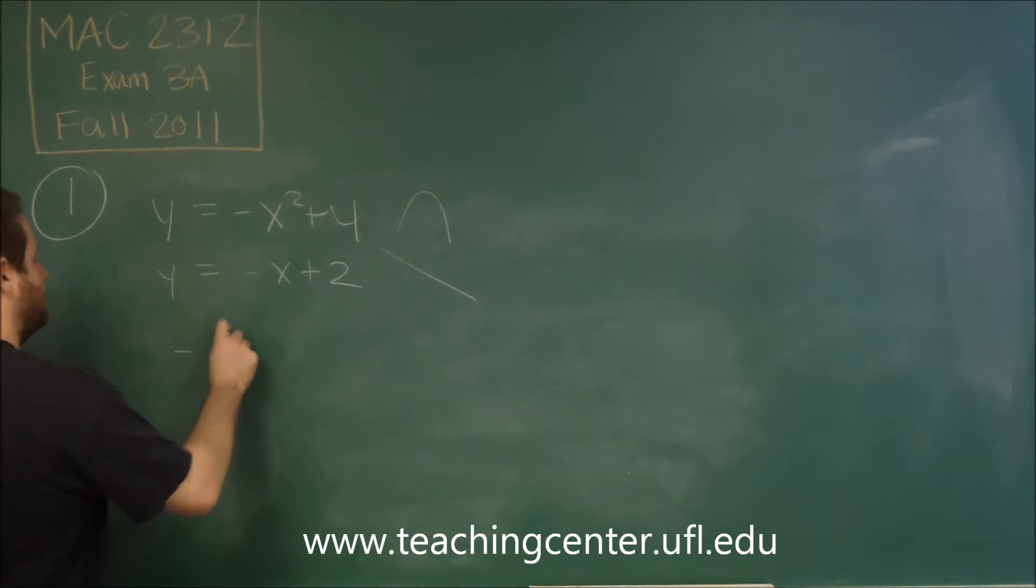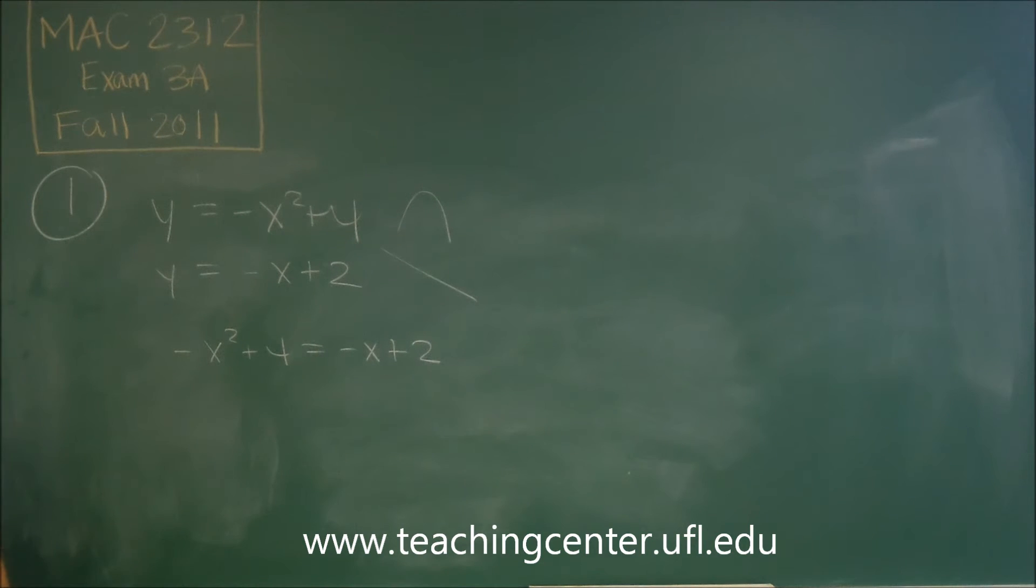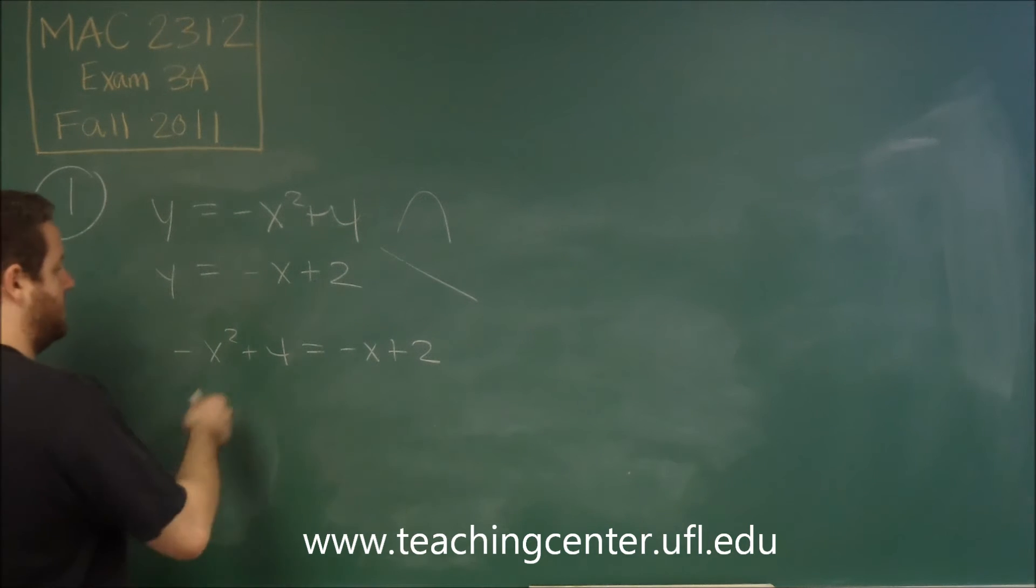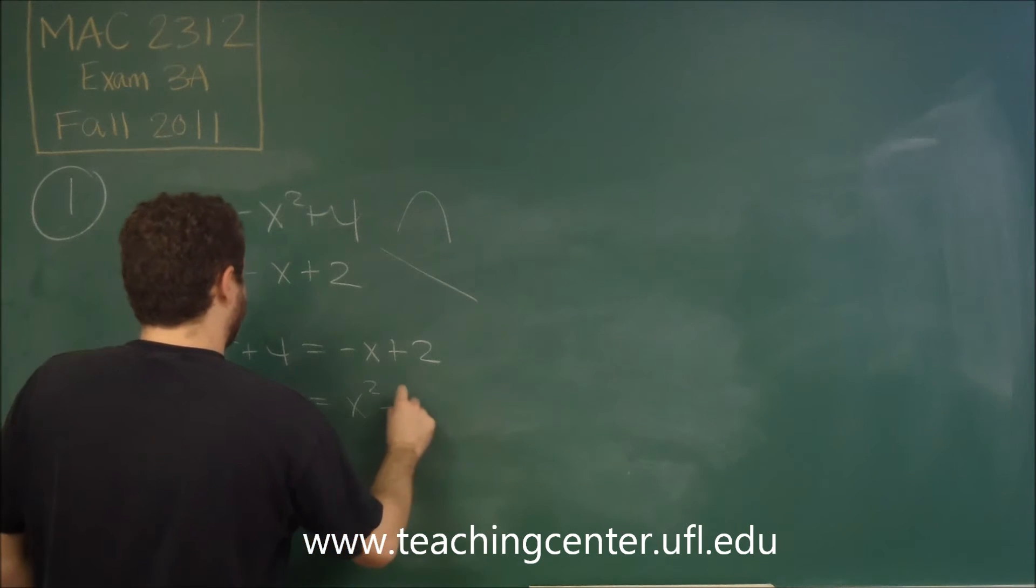And to do that, we need to set them equal to each other. So we set both functions equal to each other, and we try to solve this. In this case, we want to move everything over to the right side, and we would get x squared minus x minus two.